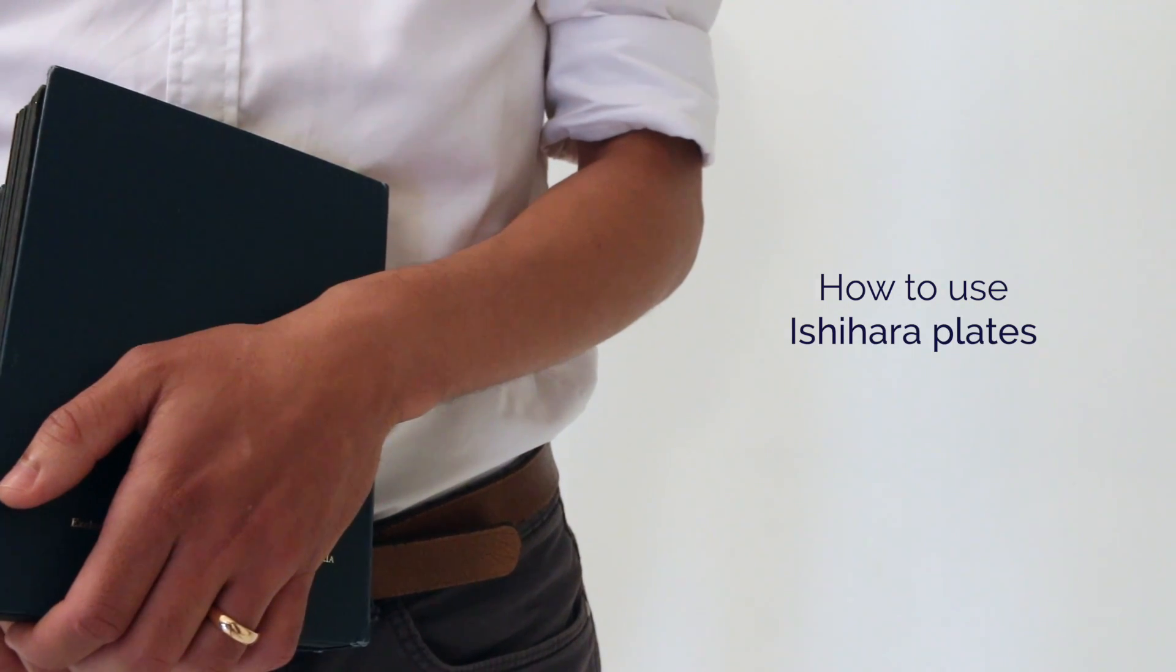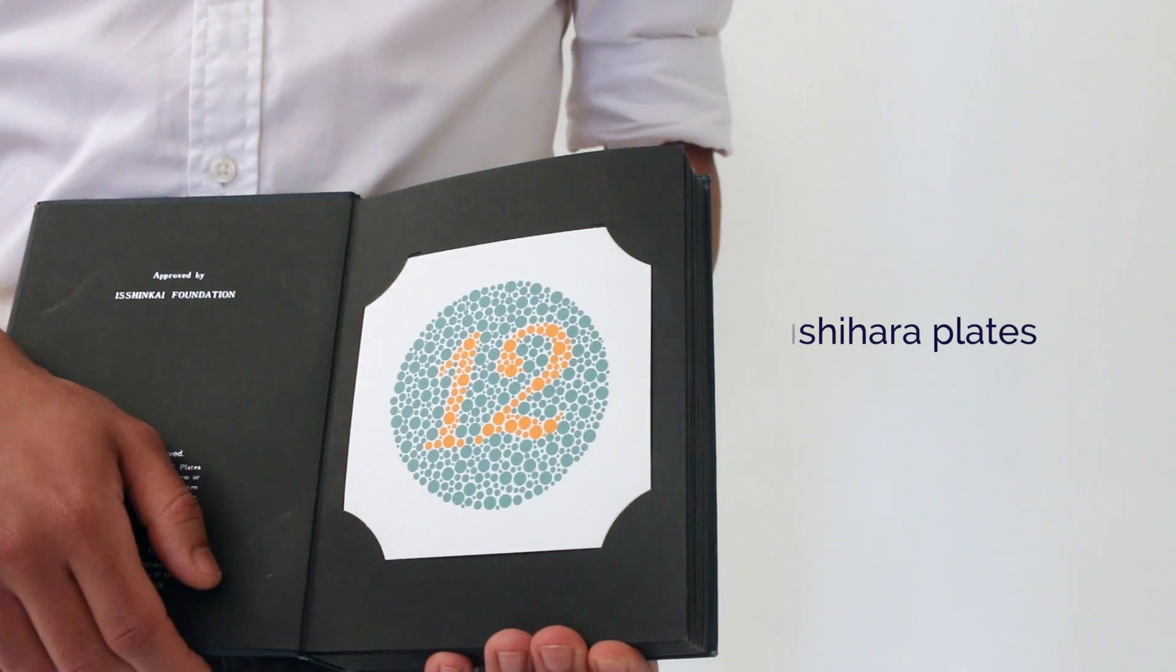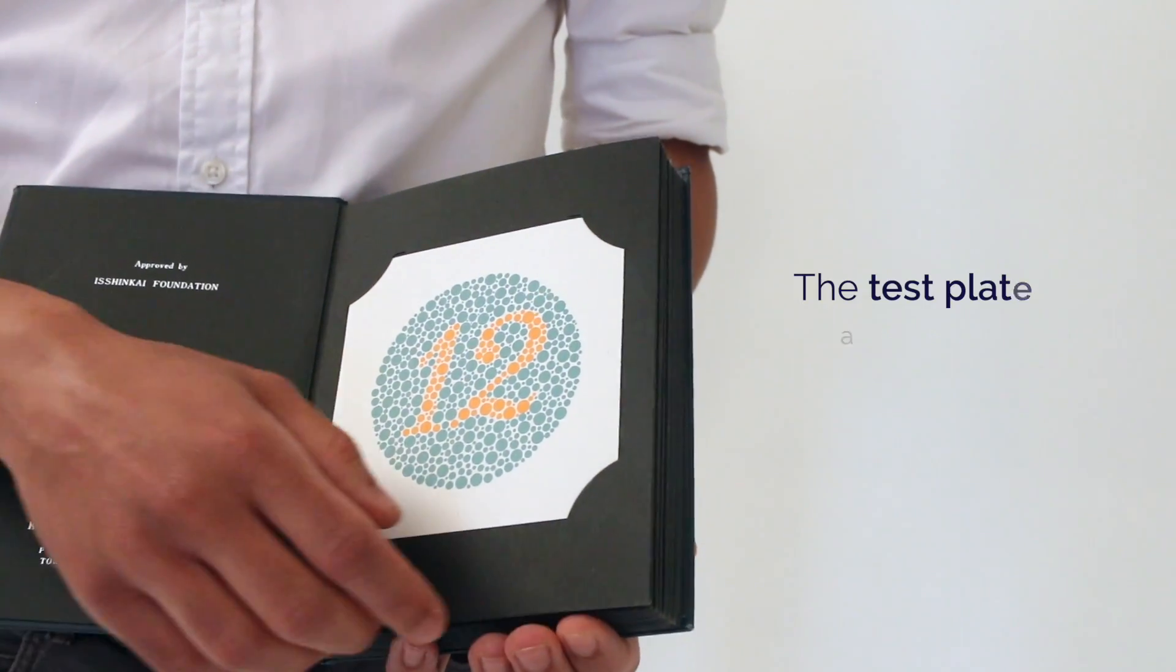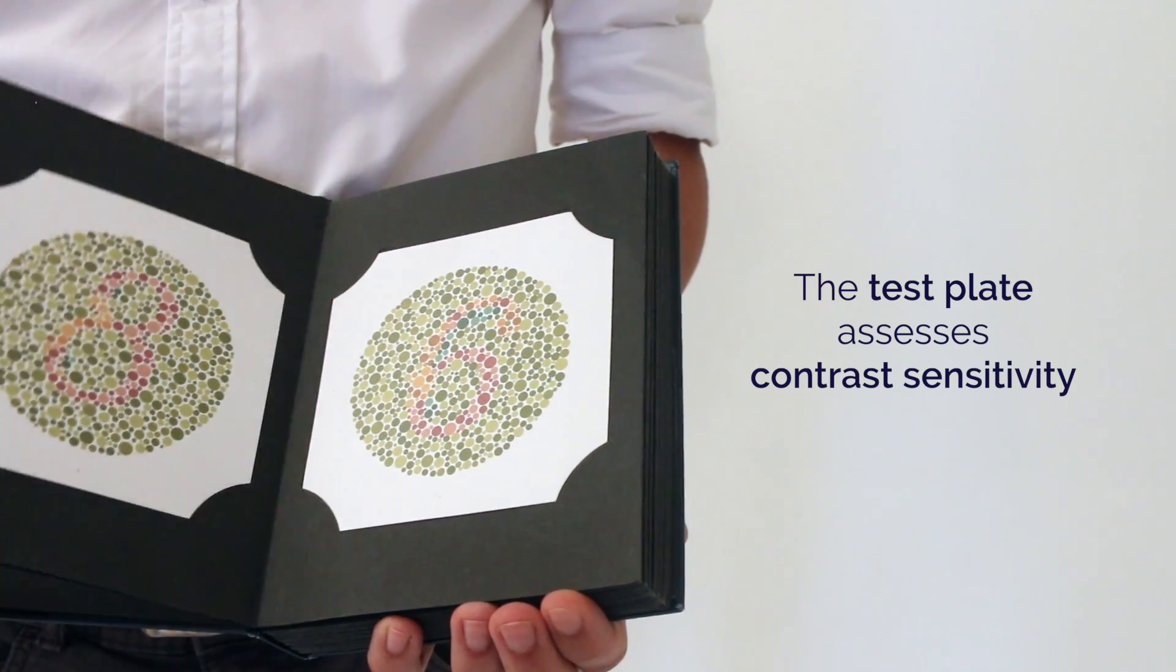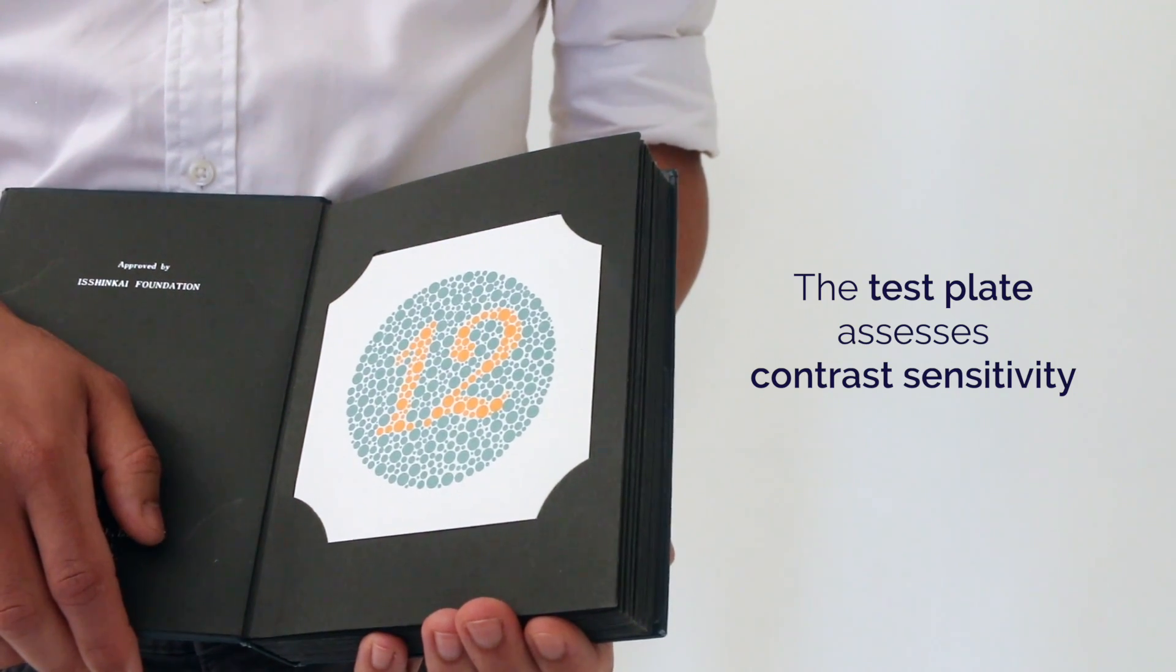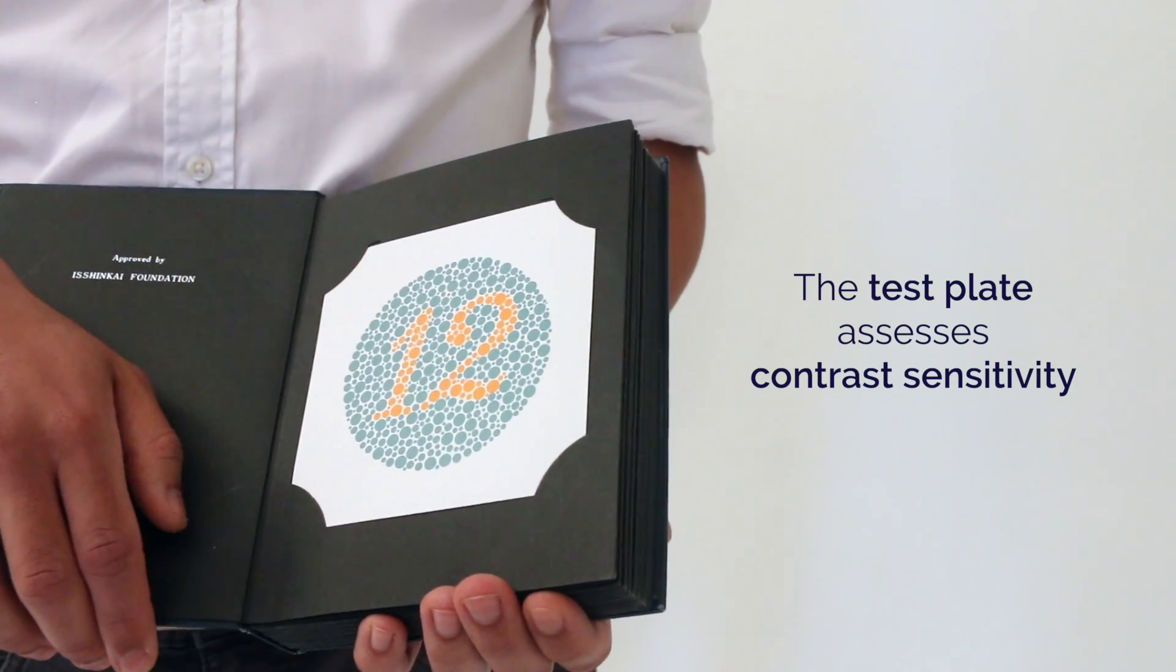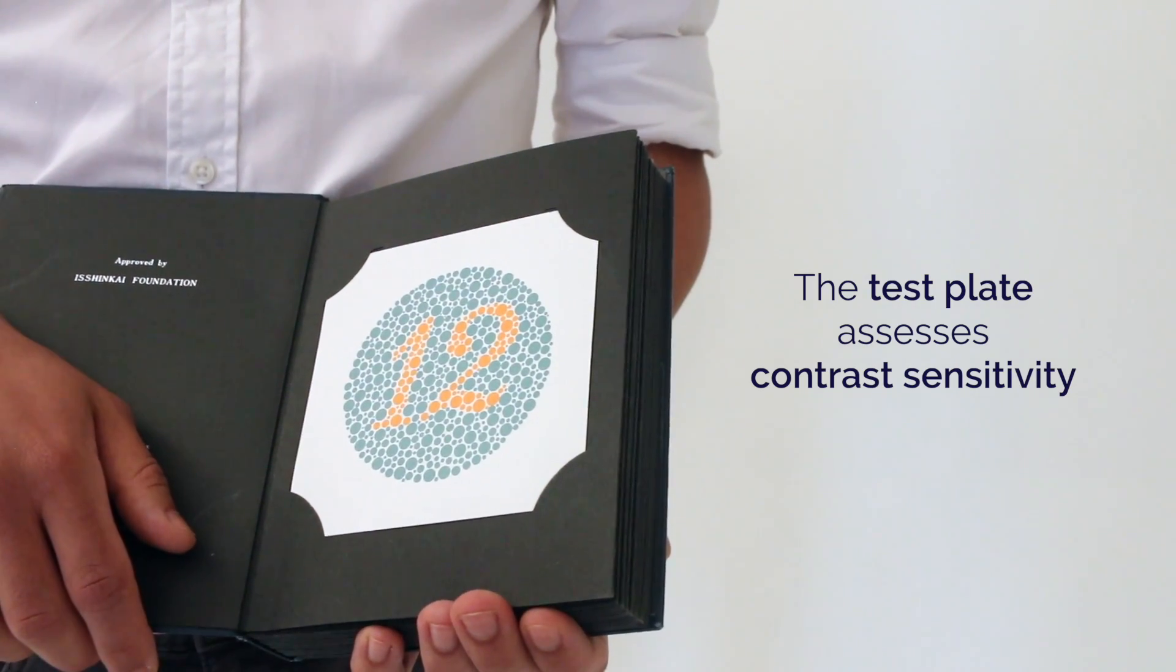To examine colour vision, we use Ishihara plates. The first plate, the number 12 here, you can notice it's different to the other numbers. It's much easier and it's not a test of colour vision. It's a test of the patient's ability to do the test. So if they can't see this number, there's no point in proceeding with the Ishihara.